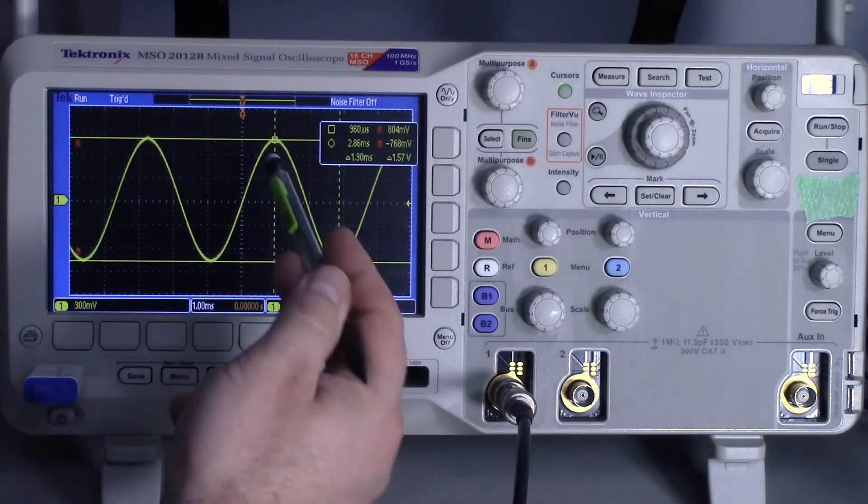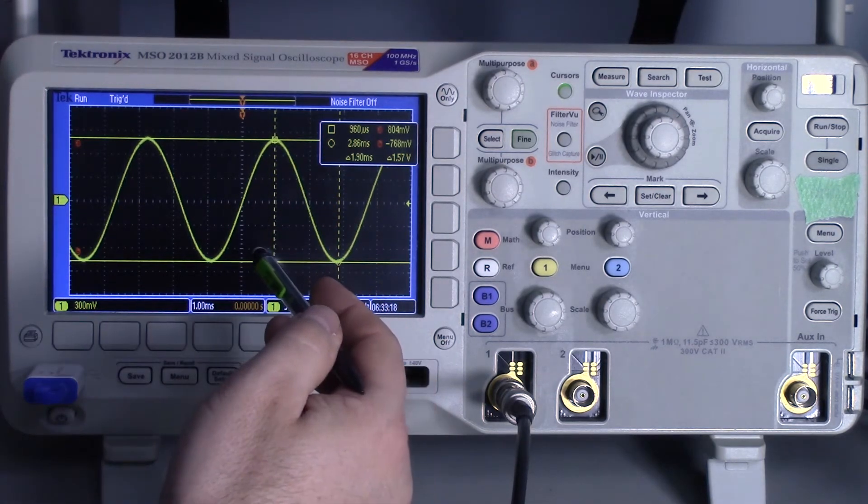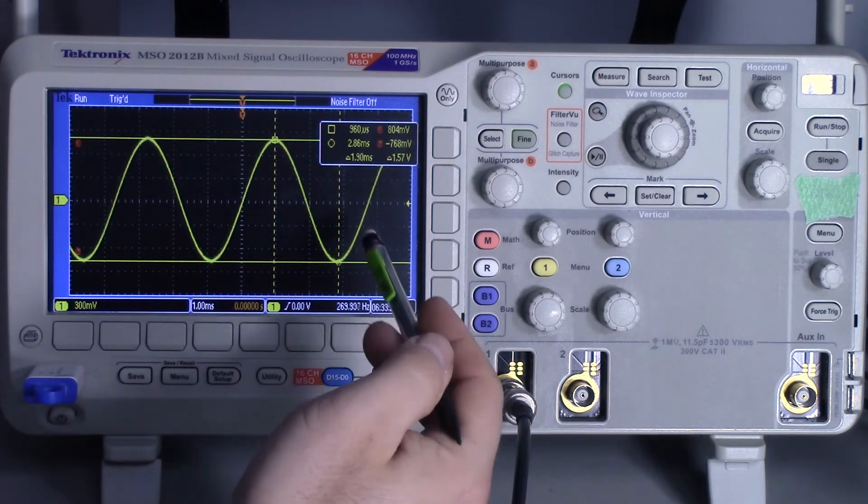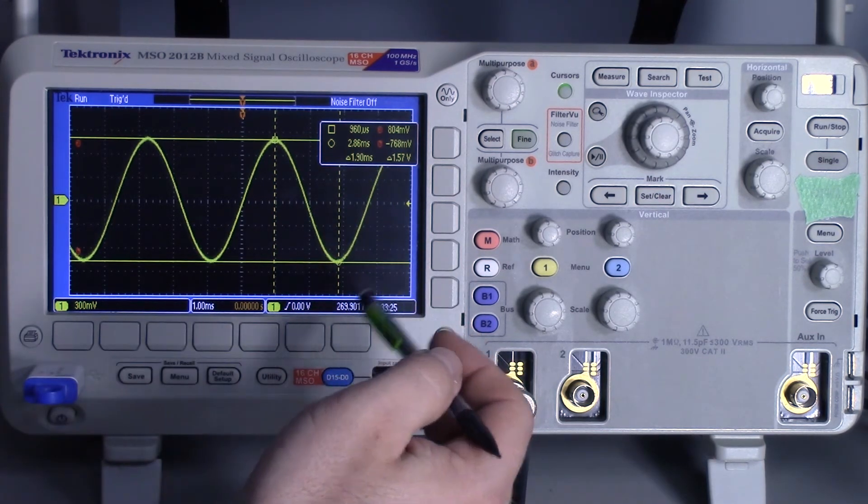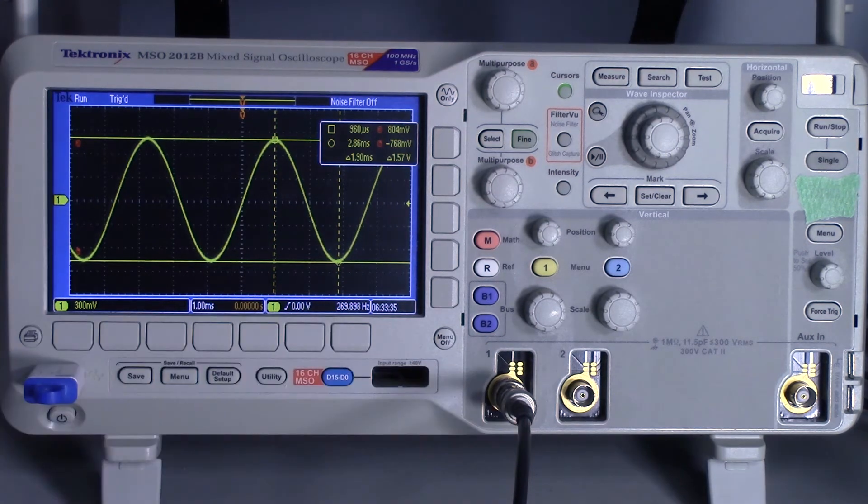Now I can move these up and down. So the advantage of that is now I can measure the peak-to-peak voltage as well as the half period of 1.9 milliseconds.